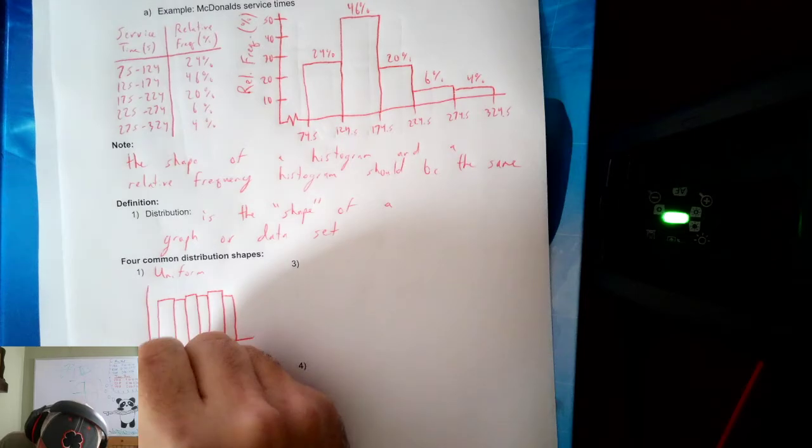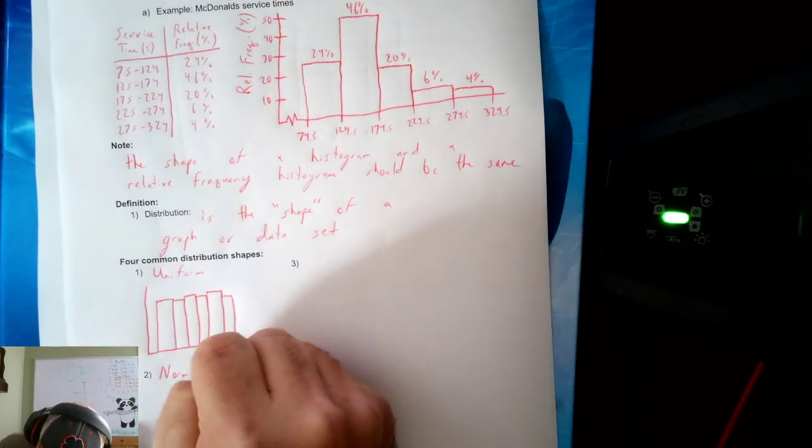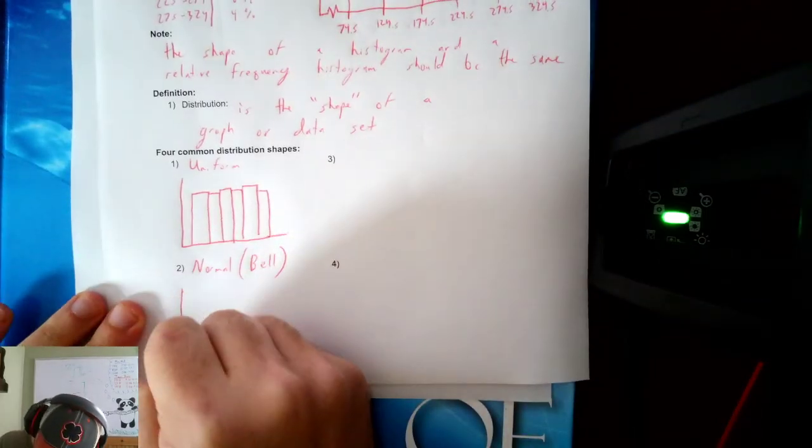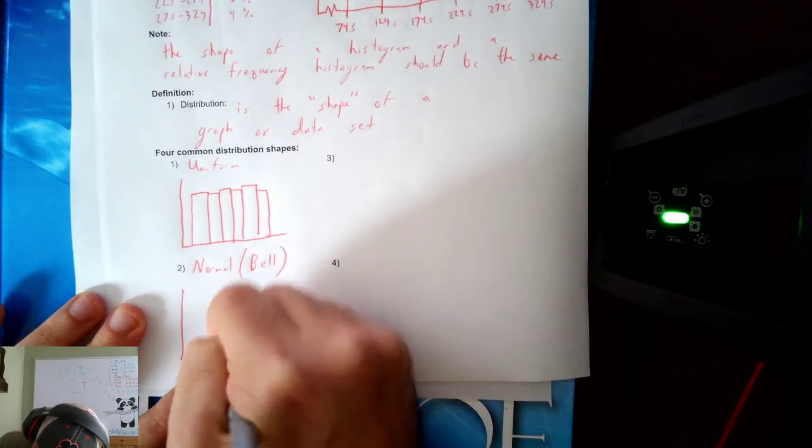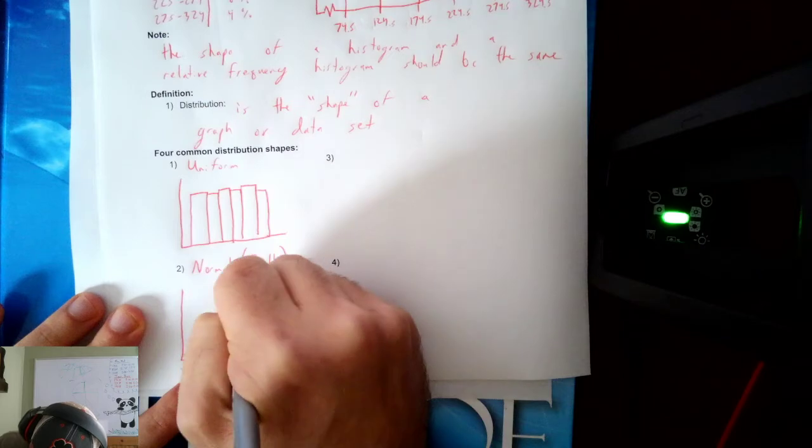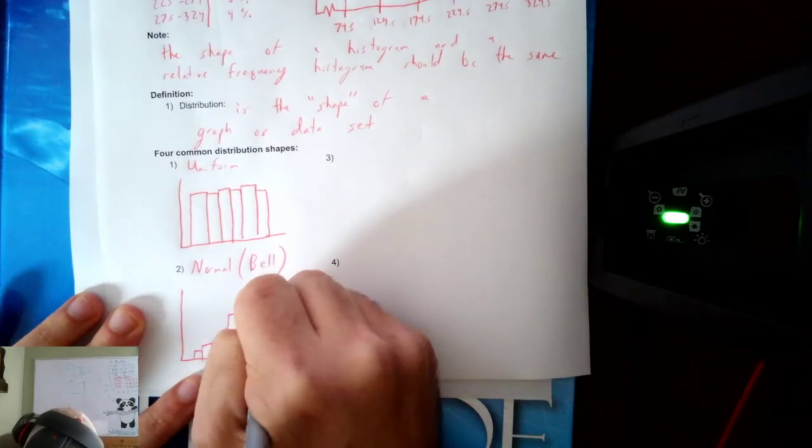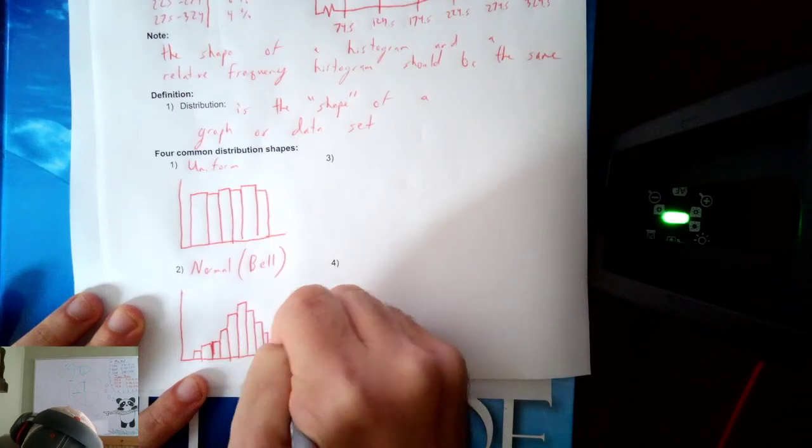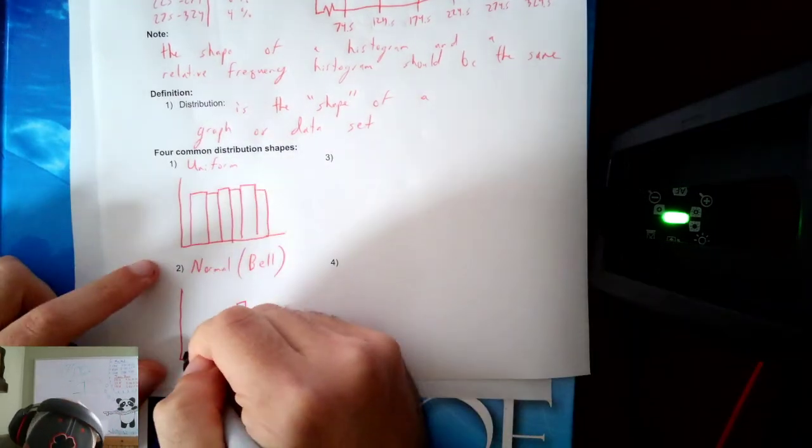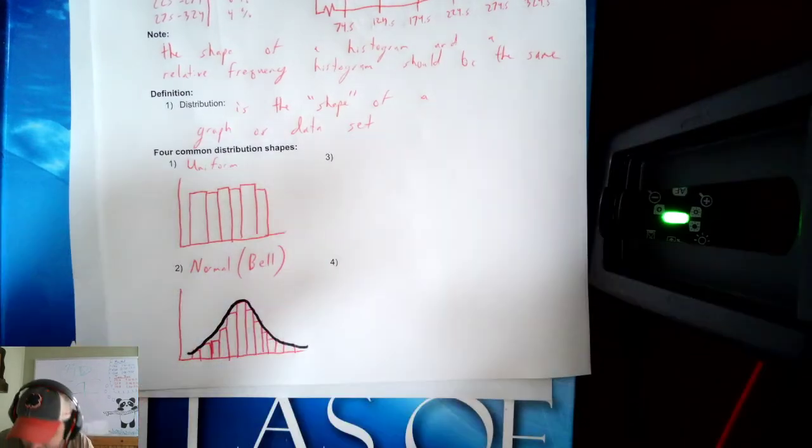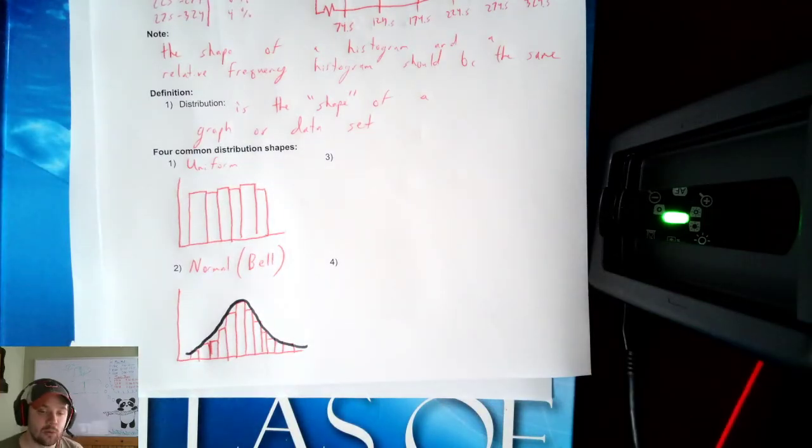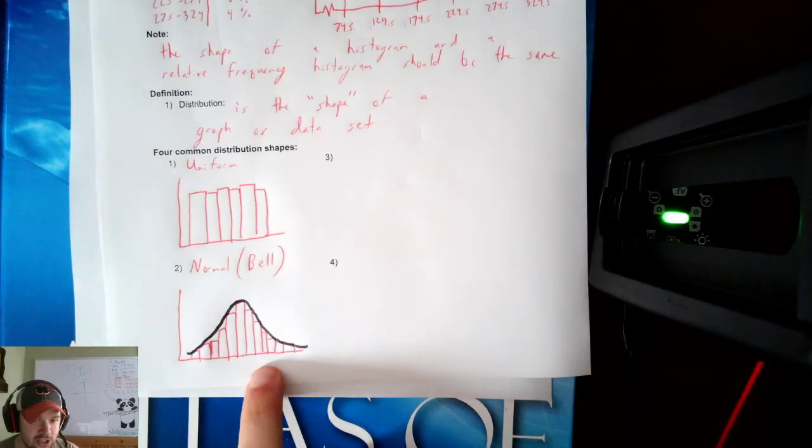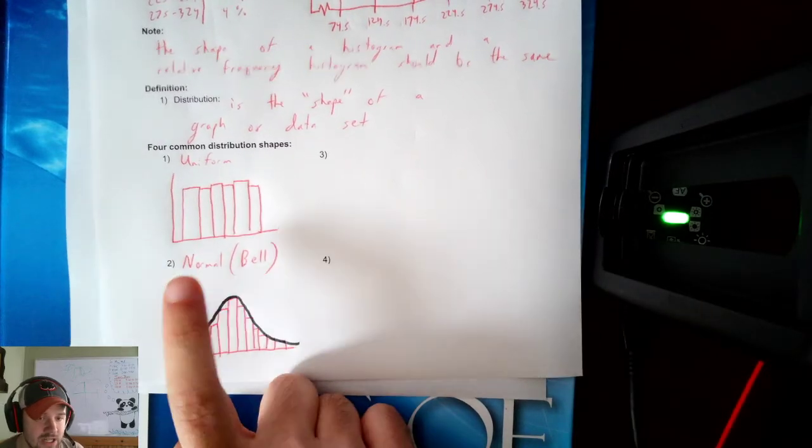The next is normal, which some of you might know as bell. And this one, if I draw my shape and I start drawing in some bars, it should peak somewhere in the middle and then taper off on each side so that the overall shape takes a nice bell-looking shape. That's why it's called the bell curve. We will call it the normal distribution. So get used to the word normal when talking about this type of distribution.